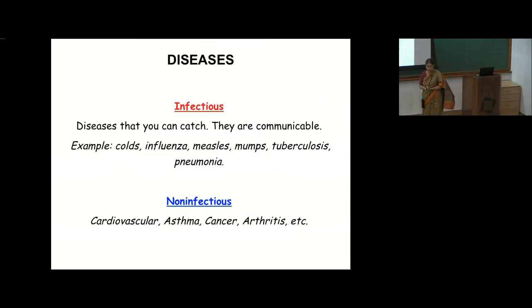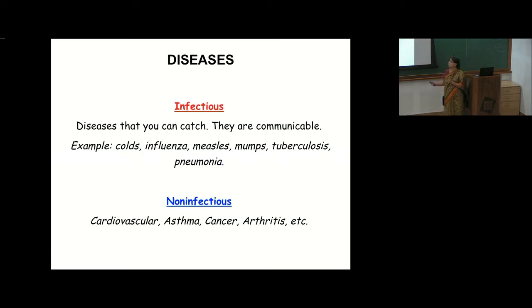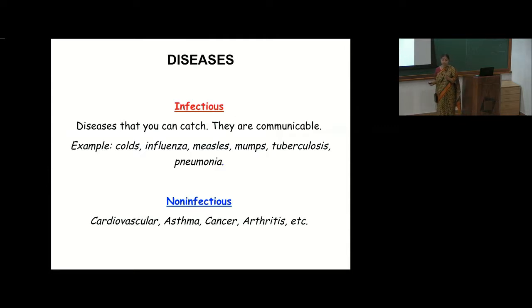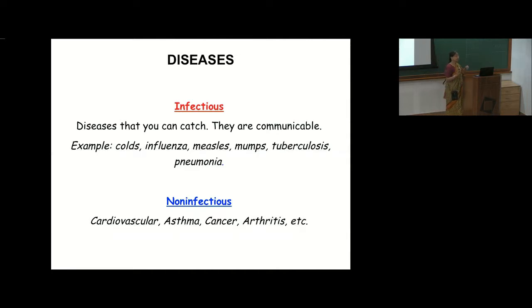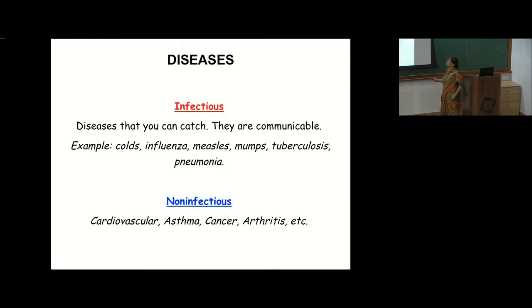When you talk about diseases, there are two types: infectious and non-infectious. We are mostly going to talk about infectious diseases — the ones which transfer from one individual to another. They come in all different forms of infectivity: you can have something like a cold which stays for seven days and goes away, all the way to tuberculosis which stays with you for a very long time, or HIV which can stay for tens of years. There are a whole lot of different types of diseases that come under infectious diseases.